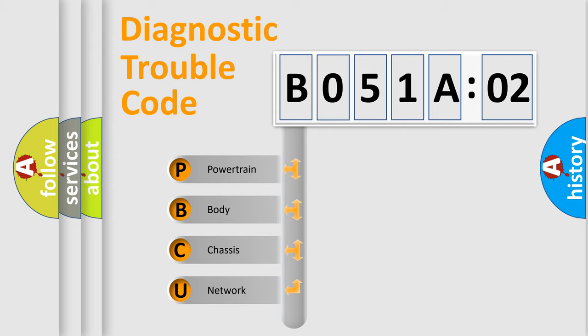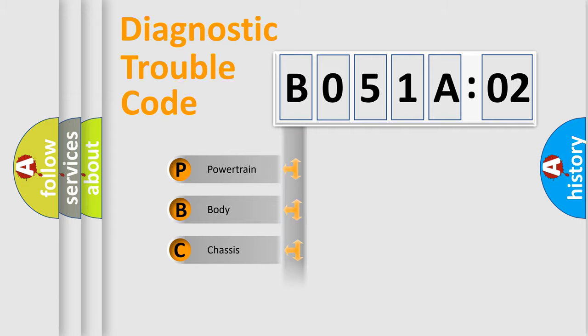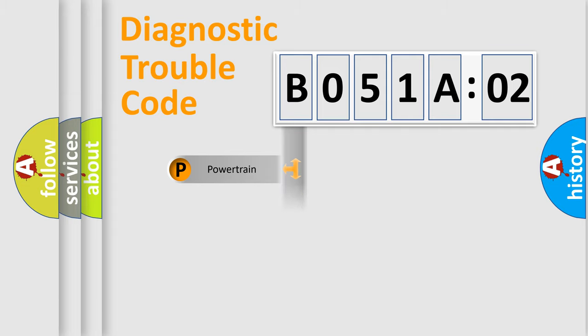We divide the electric system of the automobile into four basic units: Powertrain, Body, Chassis, and Network.